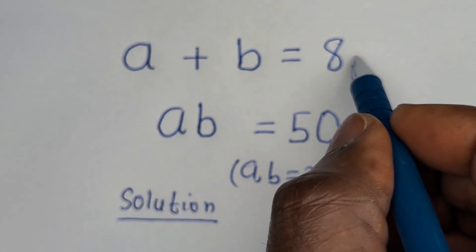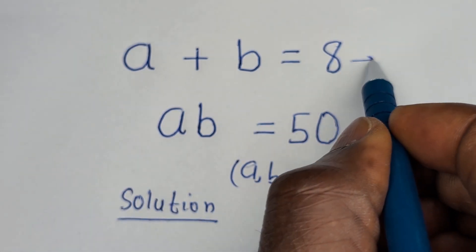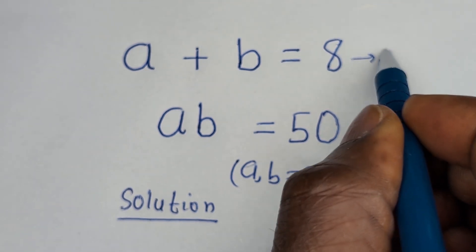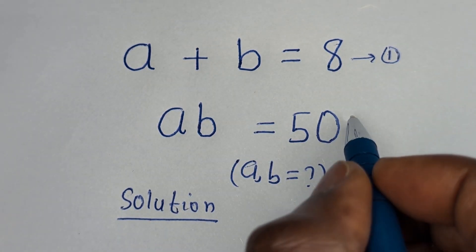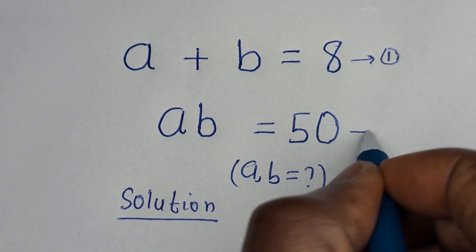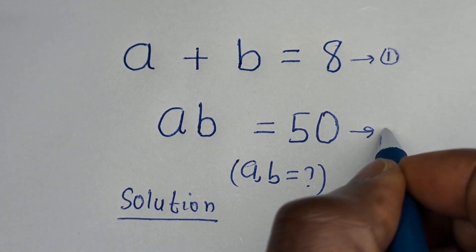A plus B is equal to 8 — let us call this equation 1. A times B is equal to 50 — let us call this equation 2.